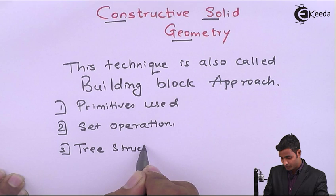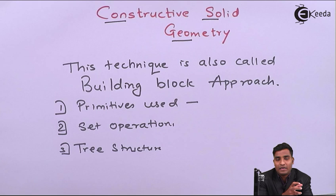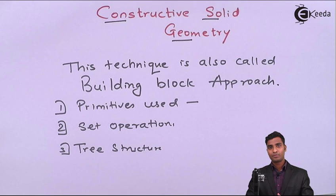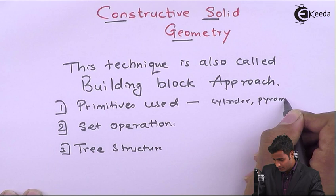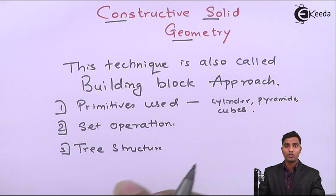Primitives are the simplest solid objects used for representation. They are very simple solid objects. For example, cylinders, cubes, prisms, and pyramids are all primitives.